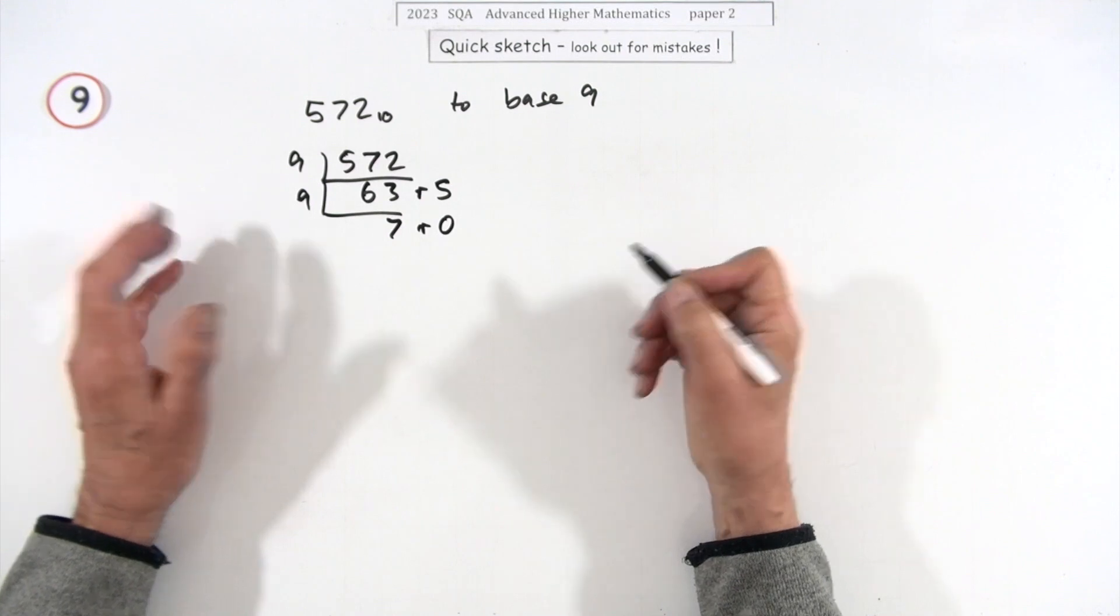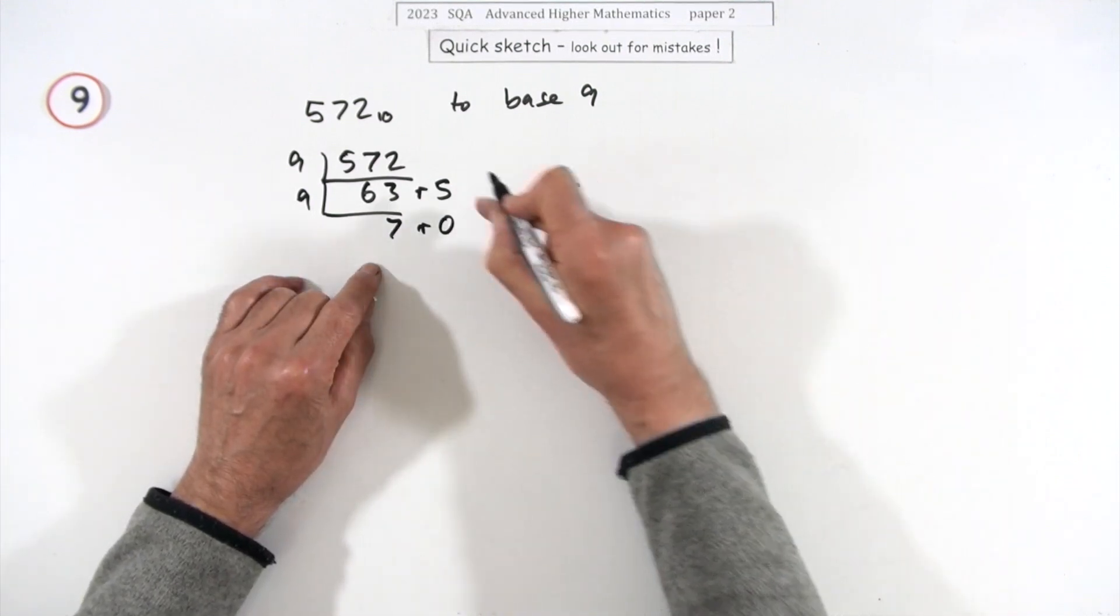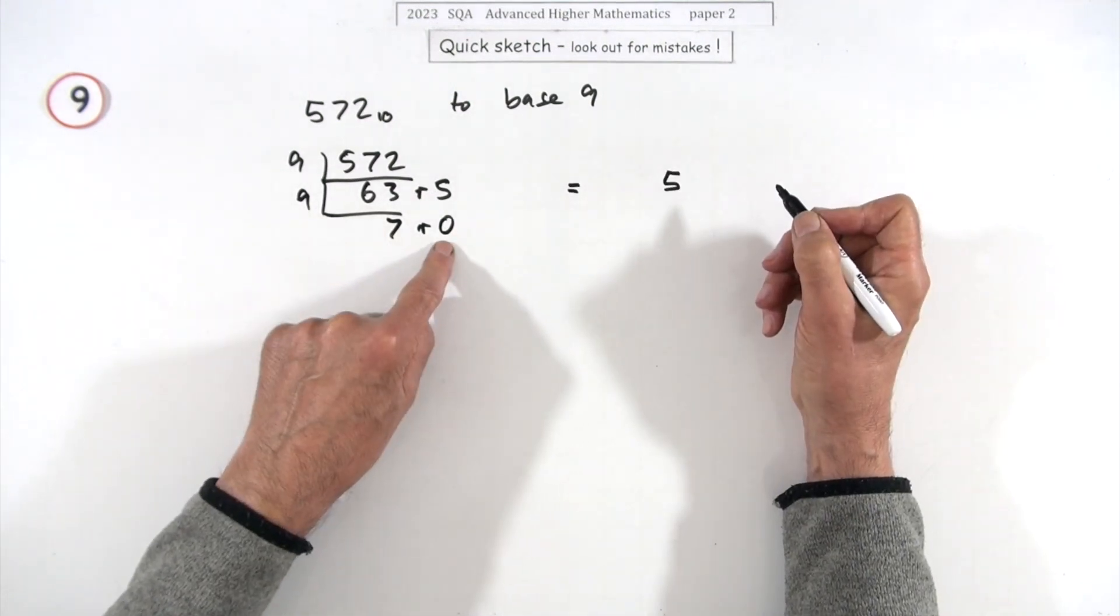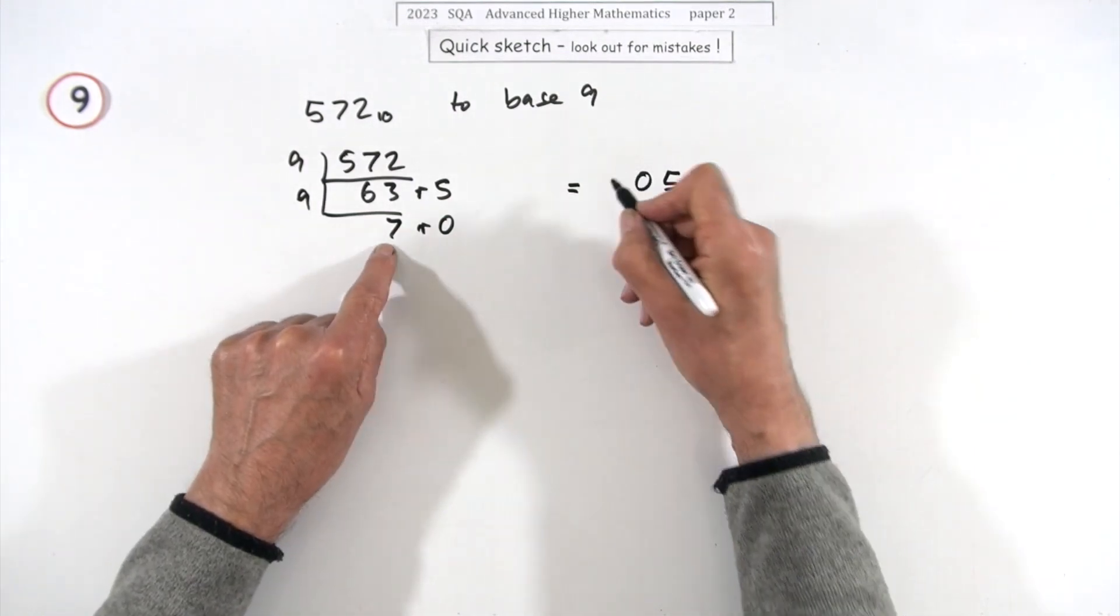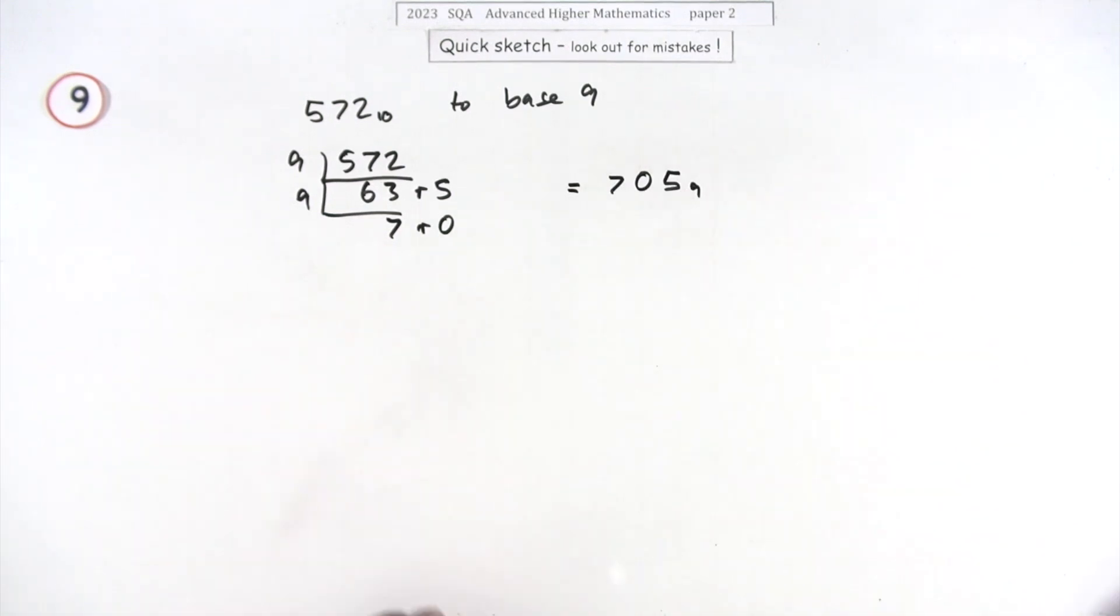Look, there's two marks for this question because that's the answer. There was 5 left over - that's in the units column. There was none left in the piles of nine column, but there was 7 in the piles of nine nines column, the nine squared column. So it's 705 base 9.